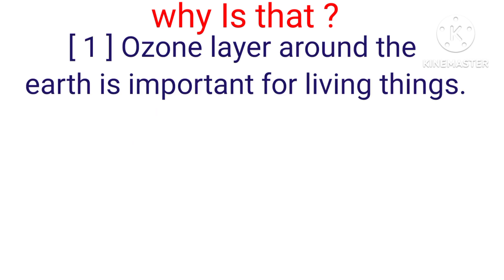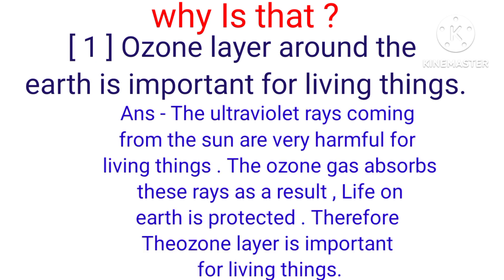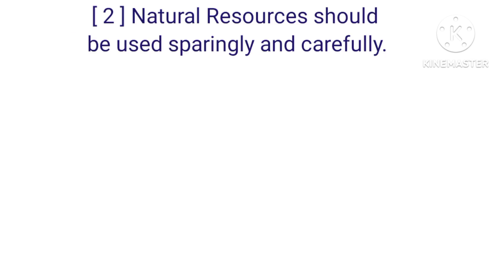Question: The ozone layer around the earth is important for living things. Answer: The ultraviolet rays coming from the sun are very harmful for living things. The ozone gas absorbs these rays. As a result, life on earth is protected. Therefore, the ozone layer is important for living things.